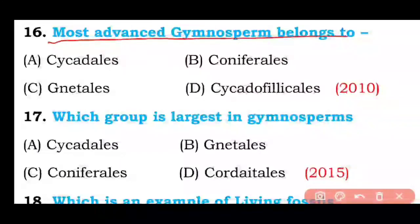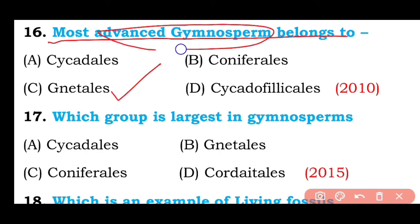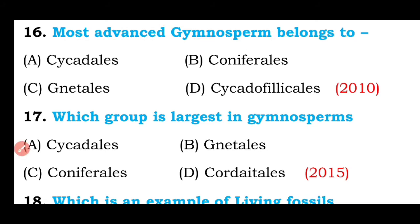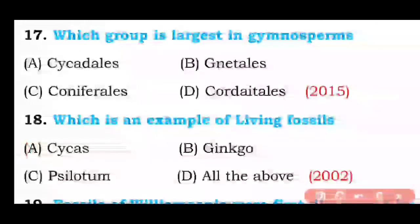Question number sixteen: Most advanced gymnosperms belong to Cycadales, Coniferales, Gnetales, or Psycadophilica? The correct answer is option C — Gnetales are the most advanced gymnosperms; they exceptionally have vessels and archegonia is also absent in them.